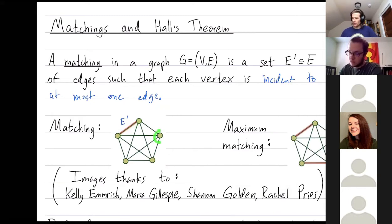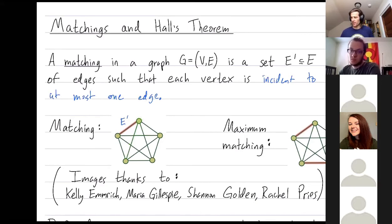Vertices are allowed to be incident to no edges, but I couldn't, for example, add this edge — that would no longer be a matching because this vertex right here at the top has been matched twice. So you could almost think of it as a partial matching: some vertices might be unmatched. Here's another example of a matching — these pairs of vertices are matched and here we have an unmatched vertex.